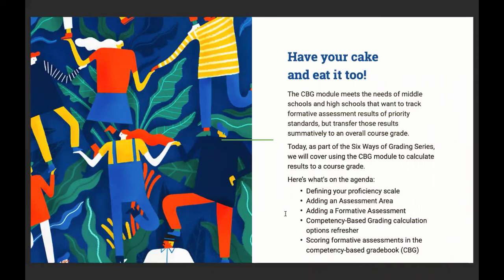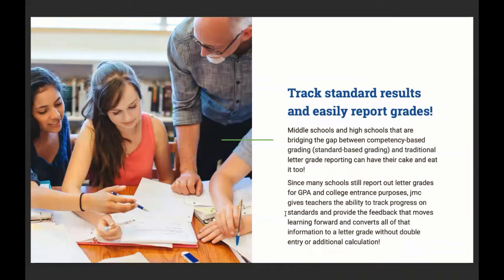The CBG module meets the needs of middle schools and high schools that want to track formative assessment results of priority standards but transfer those results summatively to an overall course grade. Since many schools still report out letter grades for GPA and college entrance purposes, JMC gives teachers the ability to track progress on standards and provide feedback that moves learning forward, converting all of that information to a letter grade without double entry or additional calculation, because your time is valuable and the tools should work for you.